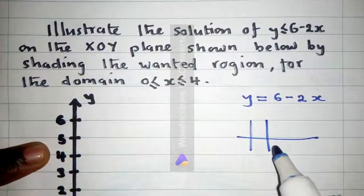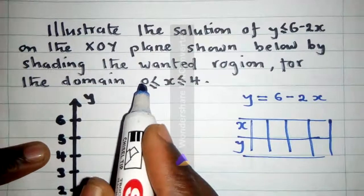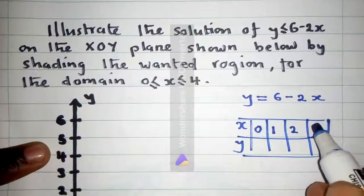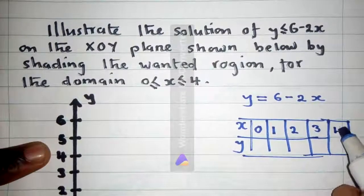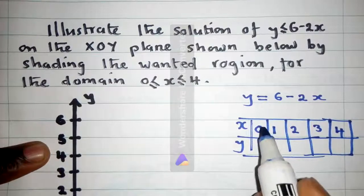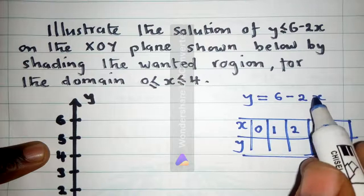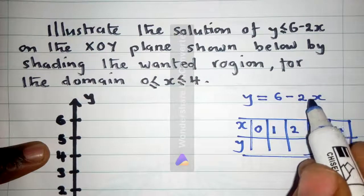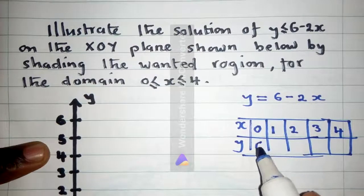So from here we can make our table of values. The domain here is starting from 0, 1, 2, 3, up to 4. And then you start doing this — you get your x. When x is 0, we put 0 where there is x, you multiply, it will be 0 here. What will be y? Y will be equal to 6.